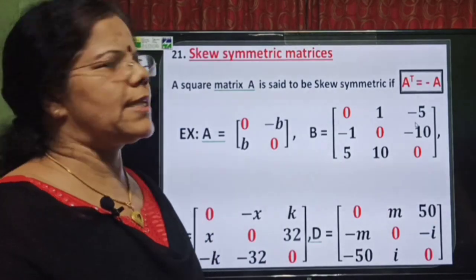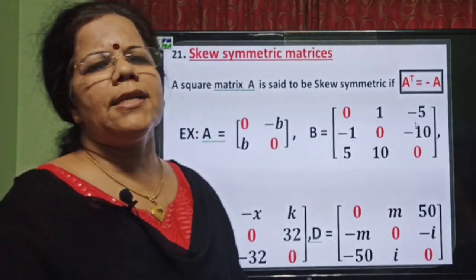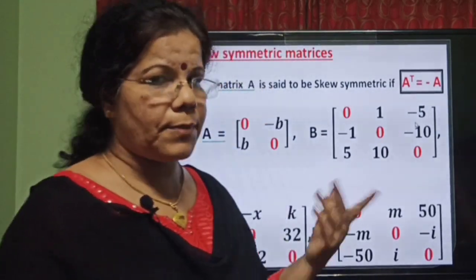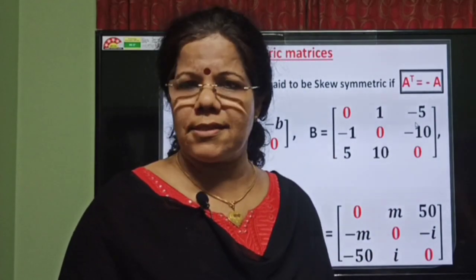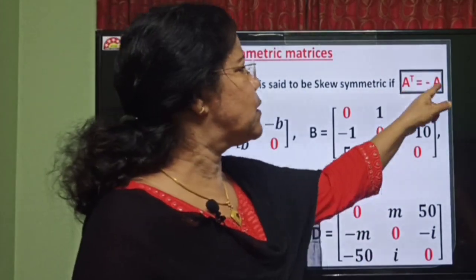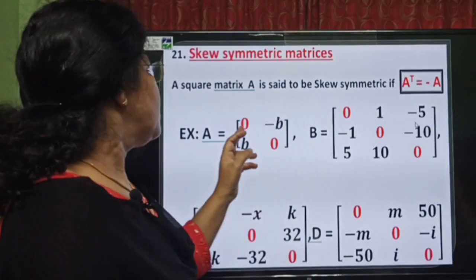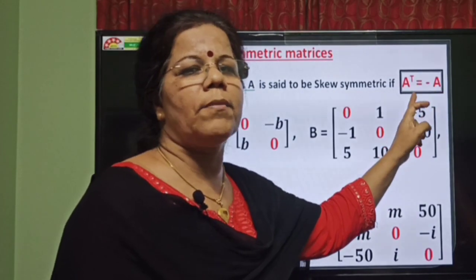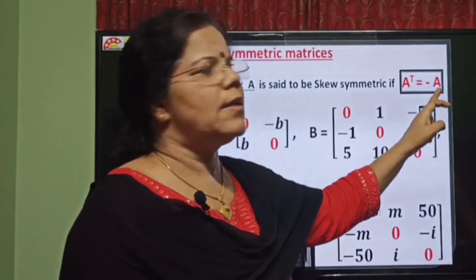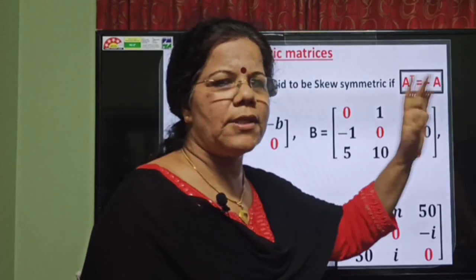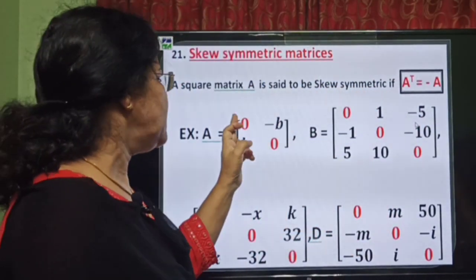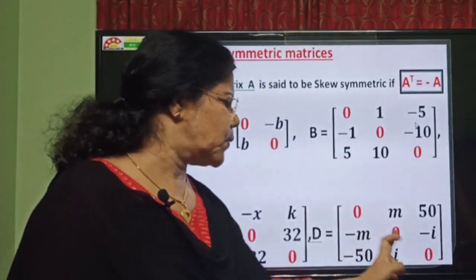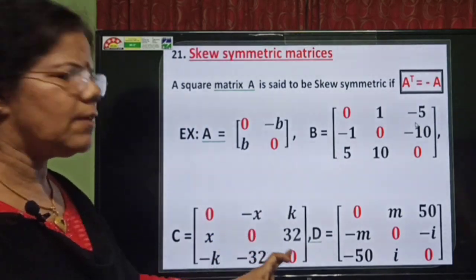Next concept is skew-symmetric matrices. A square matrix A is said to be skew-symmetric if A-transpose is equal to negative A. In the previous case, A-transpose equals A, which is symmetric. Now A-transpose equals negative A — it is skew-symmetric. The peculiarity is that all diagonal elements are 0.